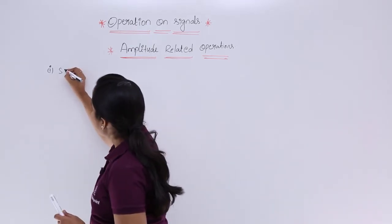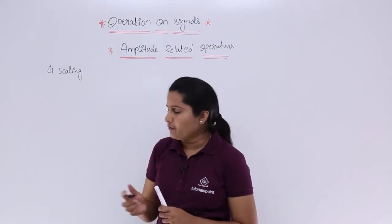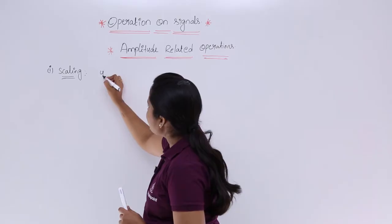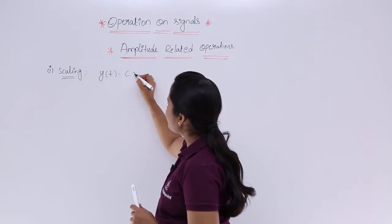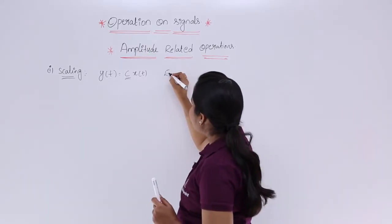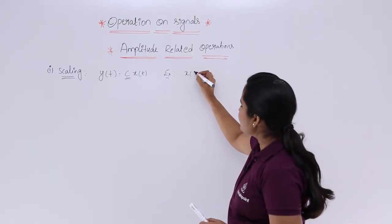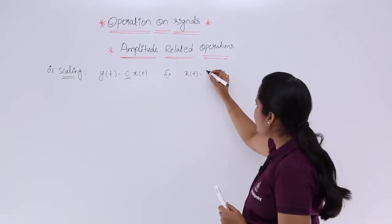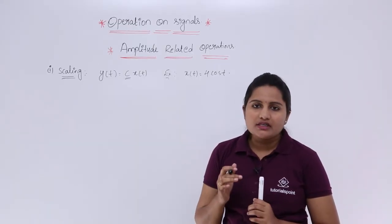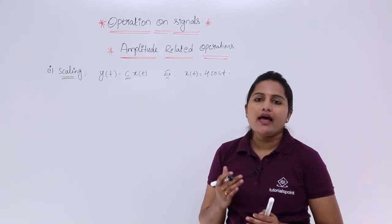For amplitude scaling, the equation is: y(t) = c · x(t), where c is the scaling factor. For example, consider a given signal x(t) = 4cos(t). If you are asked to scale by 2, then y(t) = 2·x(t) — that is amplitude scaling.